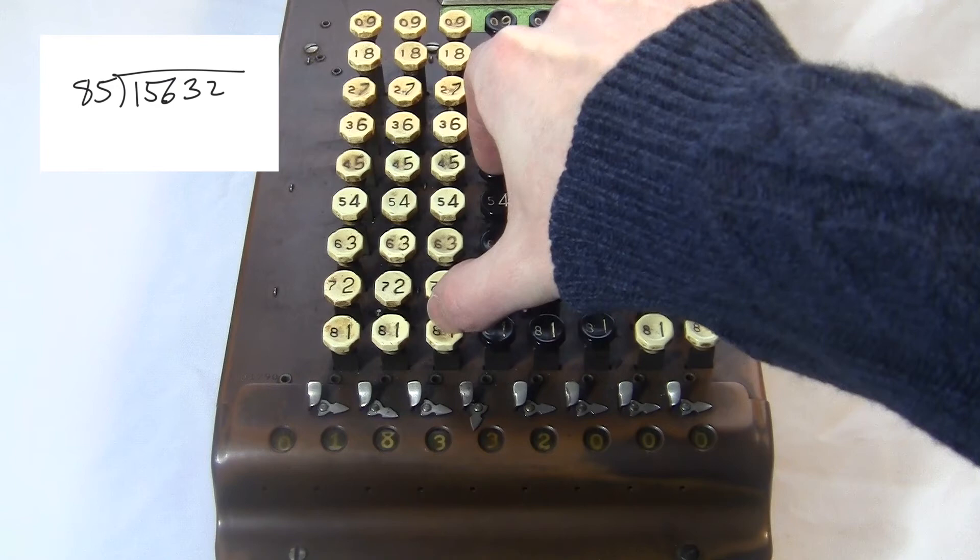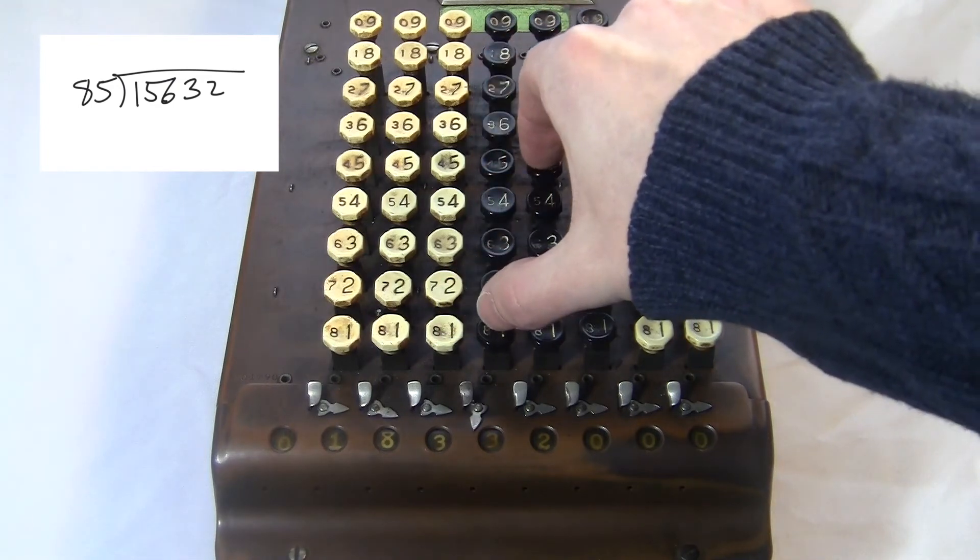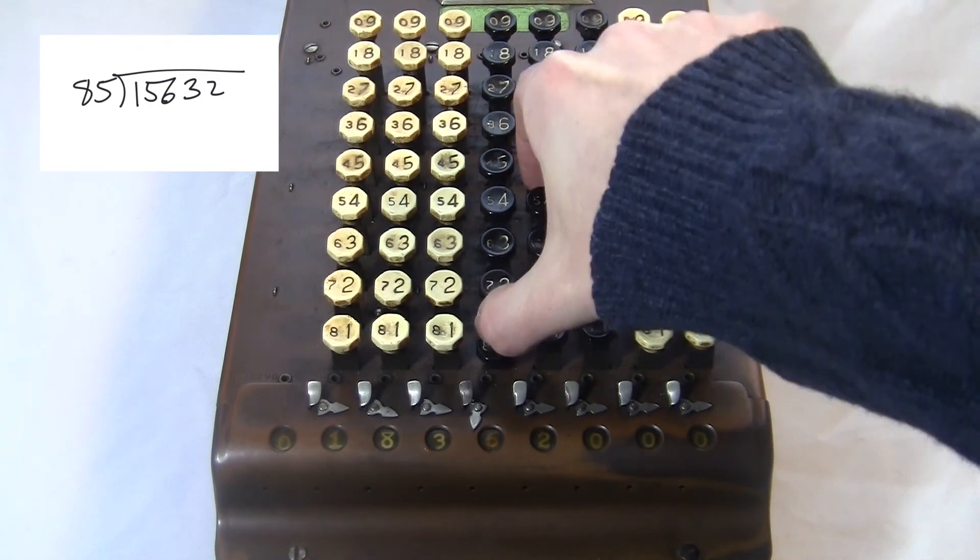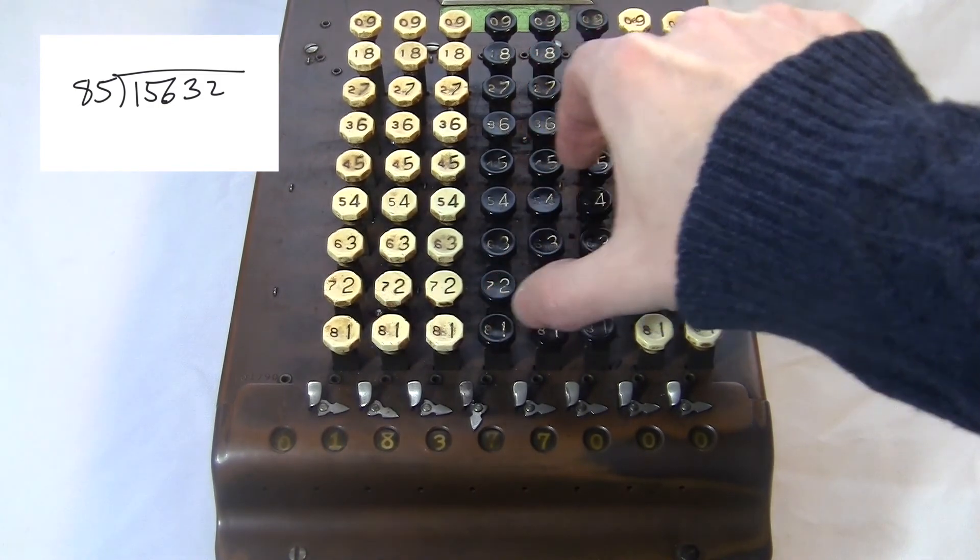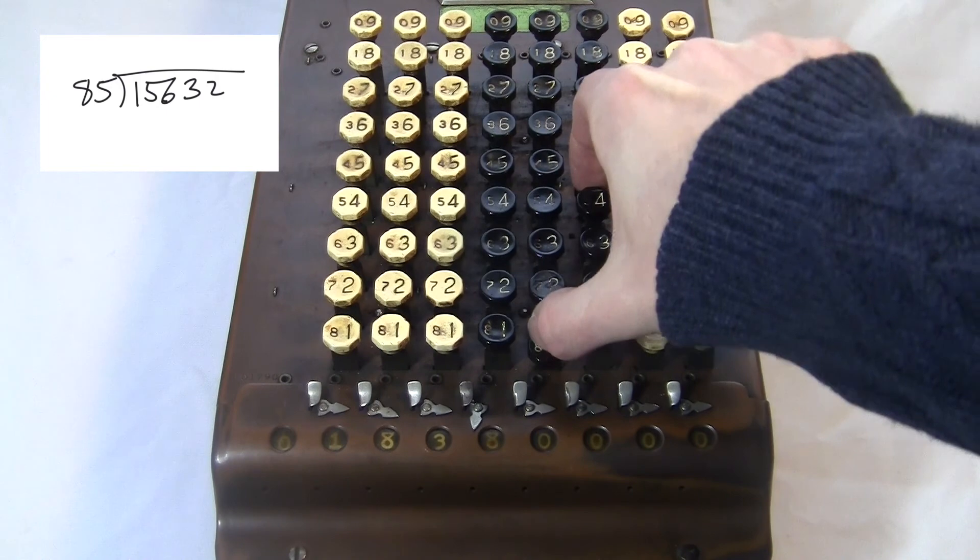Again, you check to see the remainder down there is less than 85. It is, so I move to the right. Now I subtract three times, move over. Now seven times, actually eight.